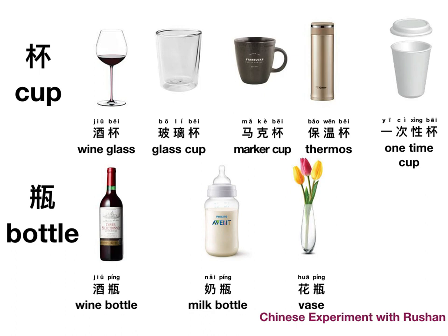Now bottle: 酒瓶 — wine bottle. 奶瓶 — milk bottle, typically for a baby. 花瓶 — a flower vase; 花 means flower. Chinese really pays attention to meaning — 花瓶 literally means 'flower bottle,' which in English is a vase.